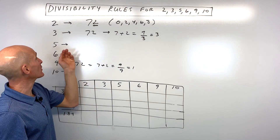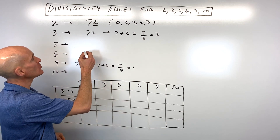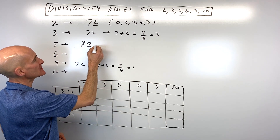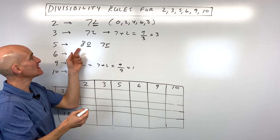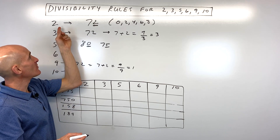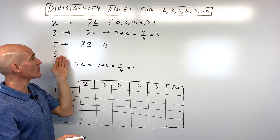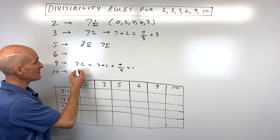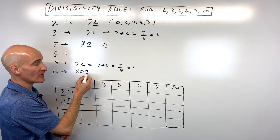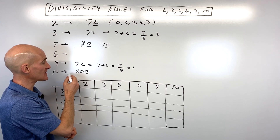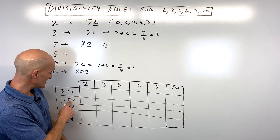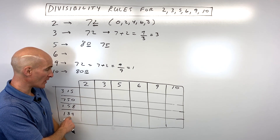We'll do some examples so you can see how these work. For 5, you want to look at the number — if the last digit is a 0 or a 5, then the number is divisible by 5. For 6, it has to be divisible by both 2 and 3. For 10, the number has to end in a 0. For example, 800 is divisible by 10 because the last digit is a 0. So see if you can do these four examples: 315, 750, 158, and 189.